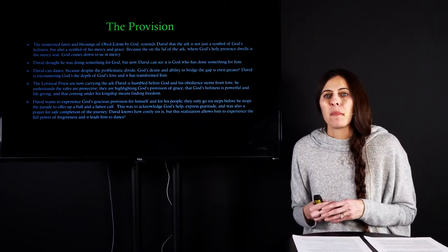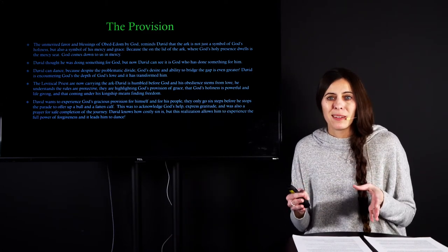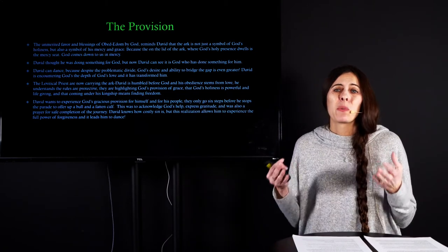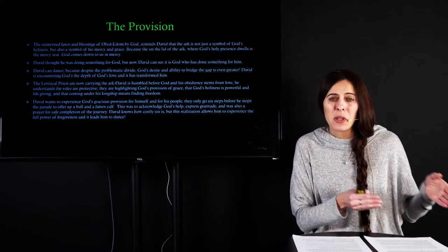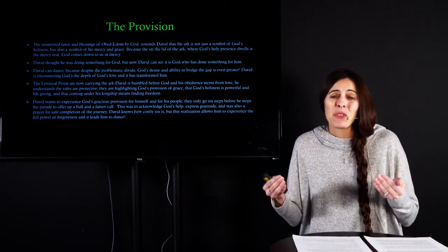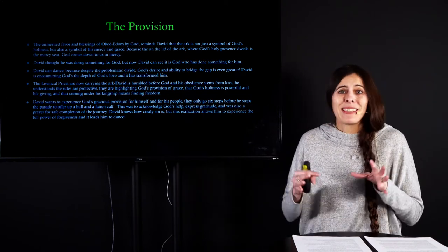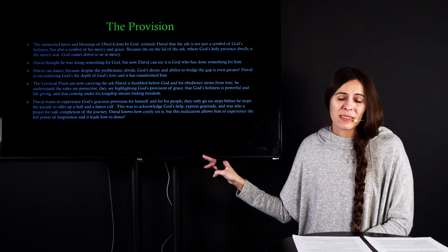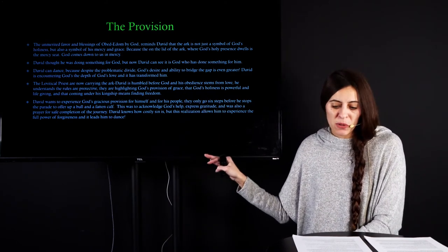And David, he is so full of this, that they take six steps. And David can't help himself but stop the parade and sacrifice. And they sacrifice, they offer up a bull and a fattened calf. And it says that they did this to thank God for helping them. It tells us that in the Chronicles account. David, the last time the procession halted was because Uzzah died. But this time, it's to give thanks to God. It's to worship him. And David, he knows. He knows how costly sin is. But because of that, he knows how deeply he is forgiven. And so now David is dancing. Now he's dancing. This is what makes David dance. He's forgiven, and he is worshiping God. He has come under his kingship.